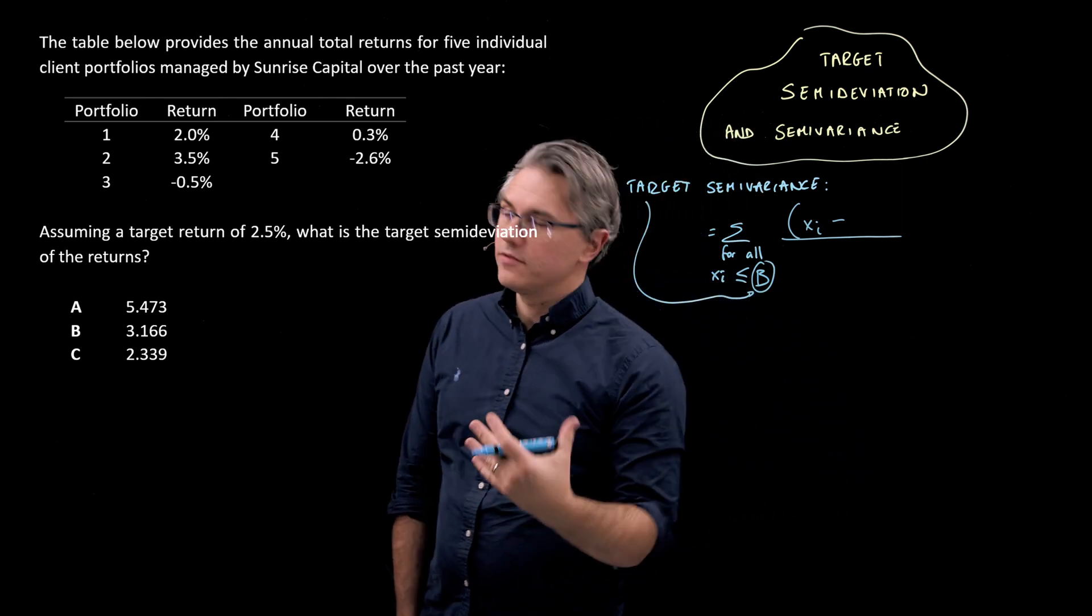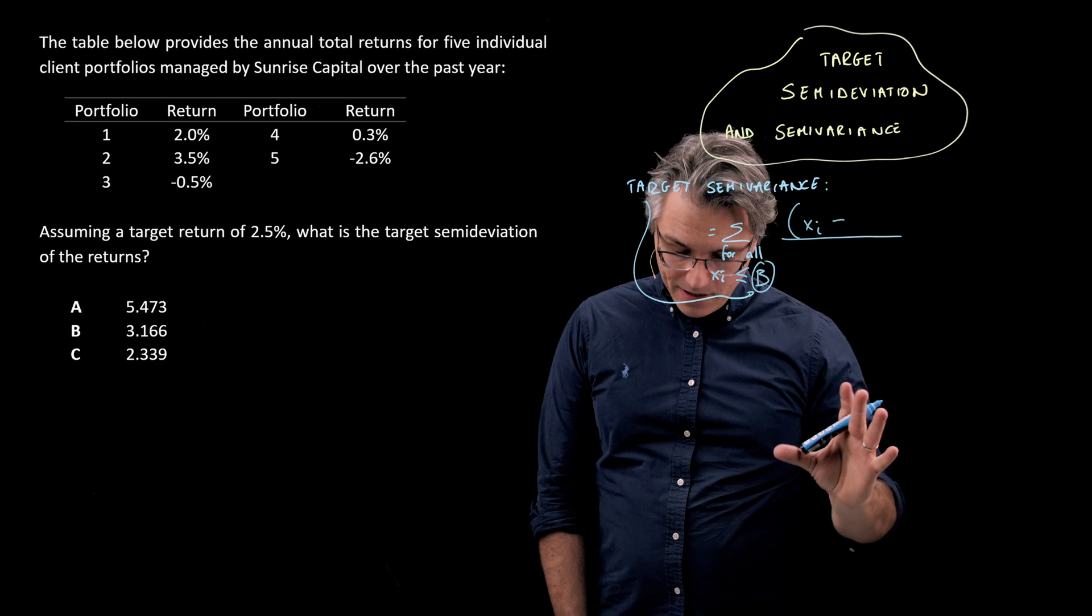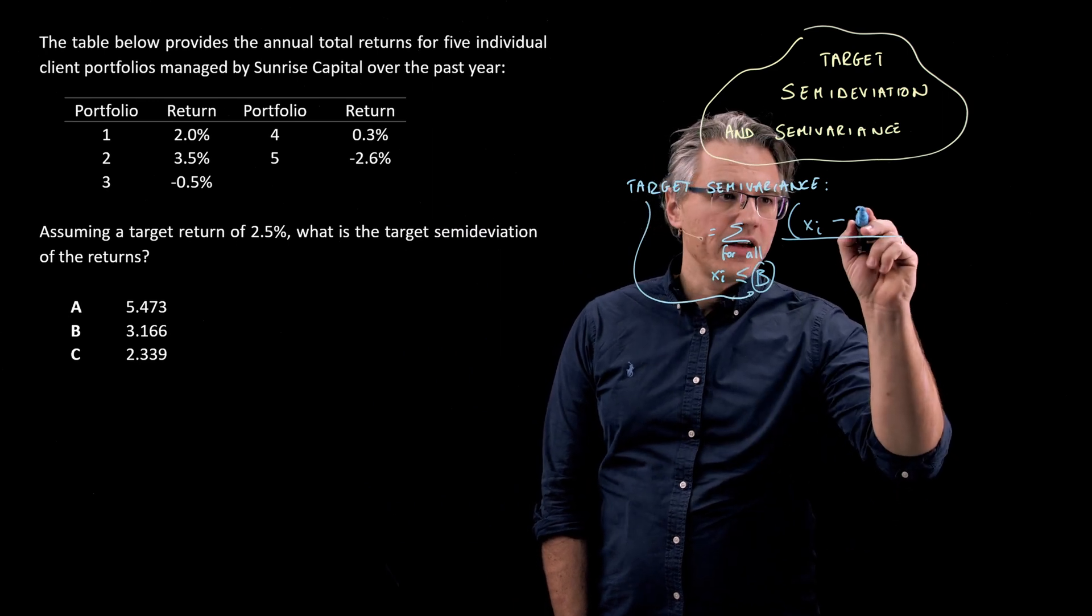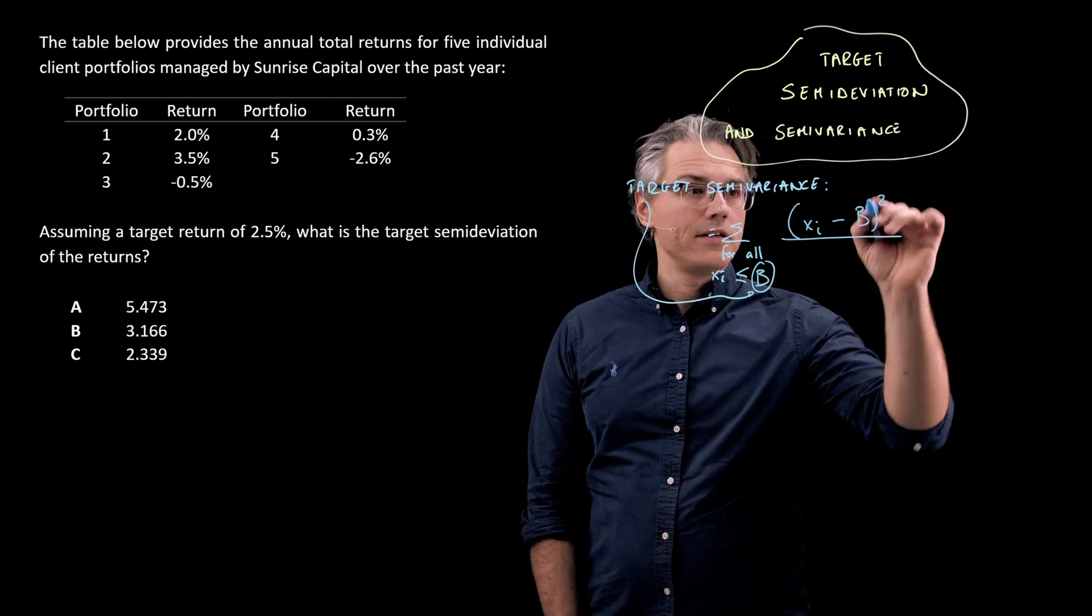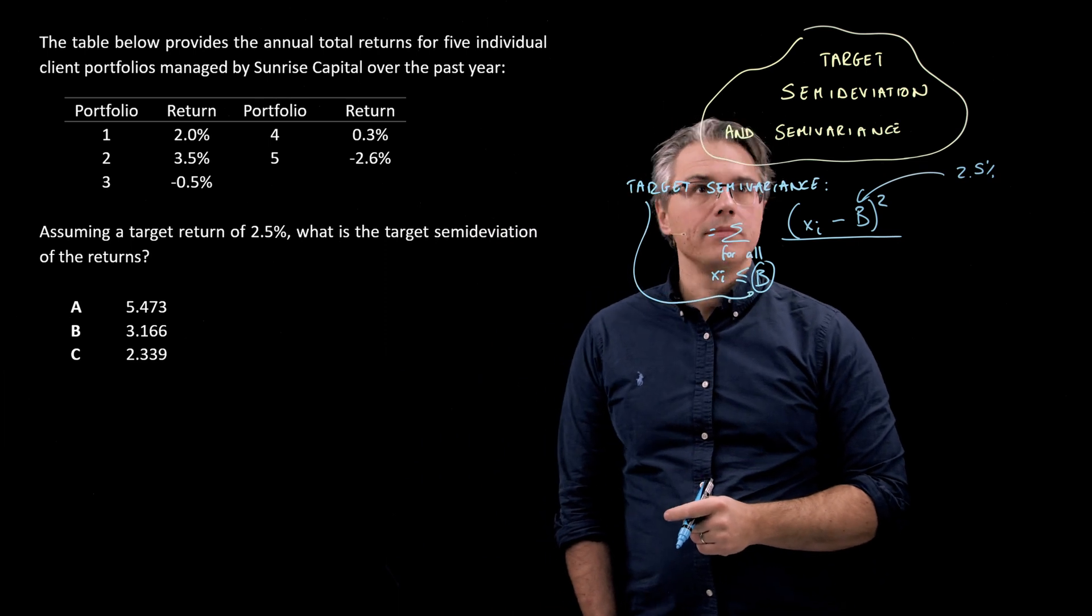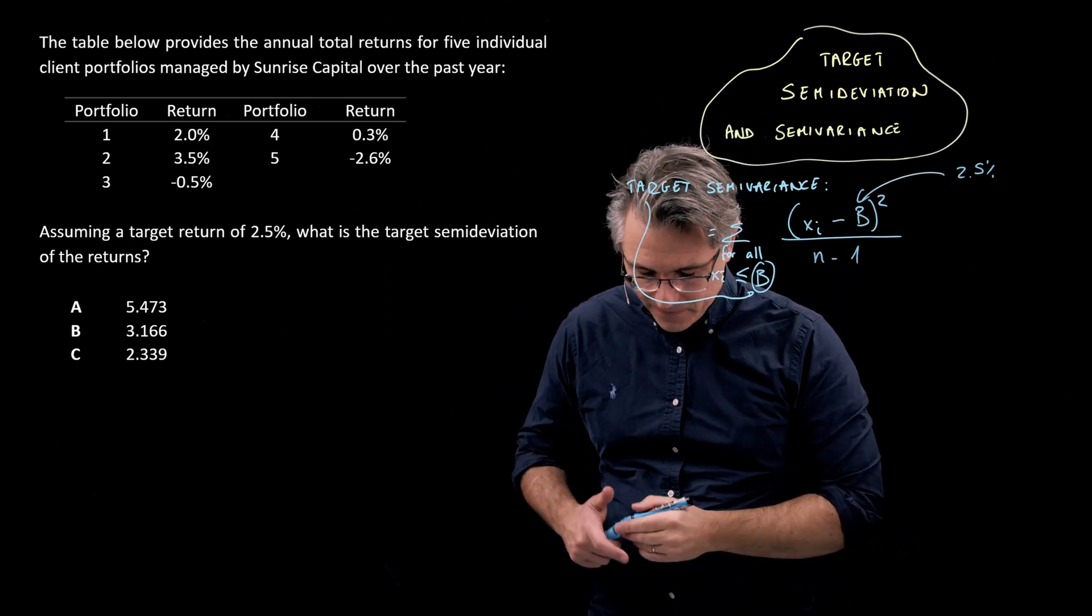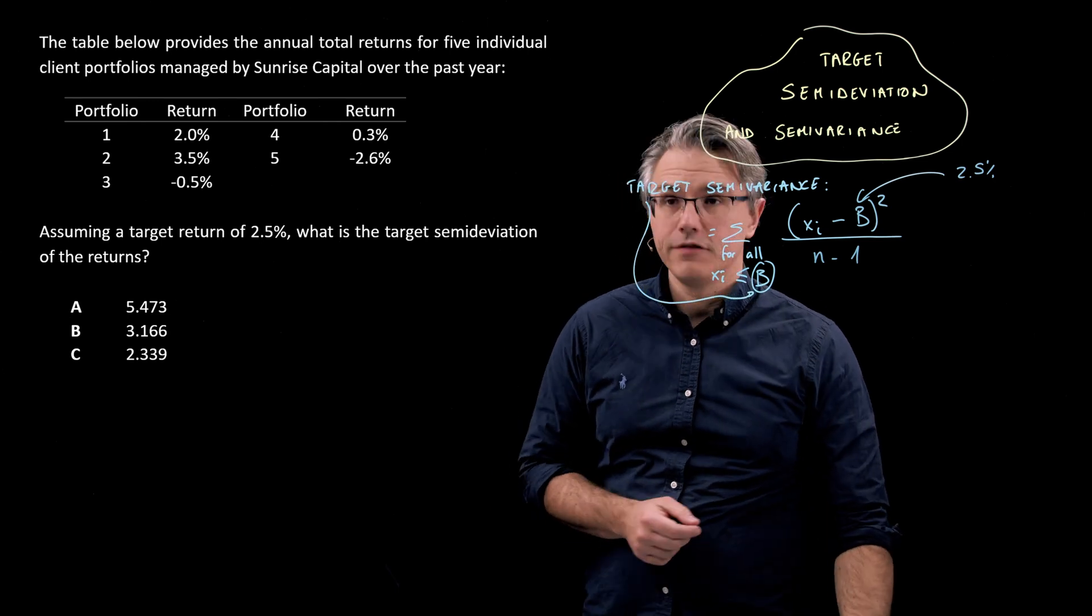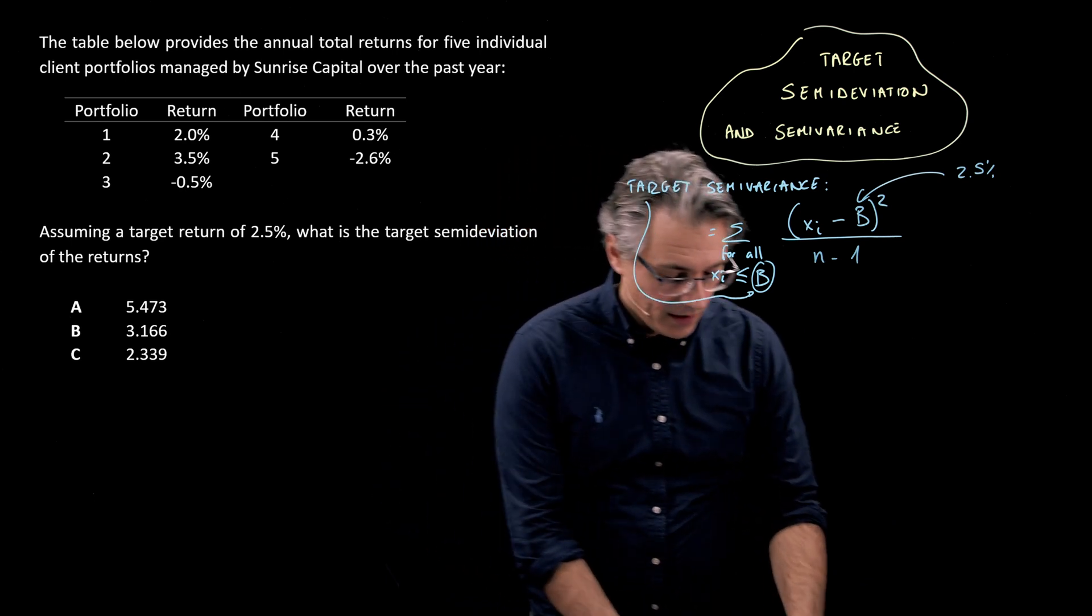Now over here, I'm going to have observations minus, previously with the formula for simply sample variance, we had x-bar here, the mean, but this time I'm going to have that value b, which in our case is 2.5%. And in the denominator, I'm going to have n minus 1, just like with the formula for sample variance.